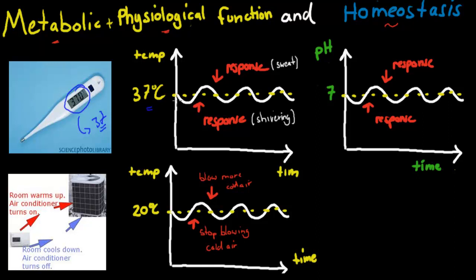For example, if we start at 37 degrees but it goes up too much, we can sweat — the response will be sweating — and that brings it back down again. Same with when it comes too low: we can start shivering, which brings it back up. These are the two responses that maintain our temperature at 37 degrees Celsius.